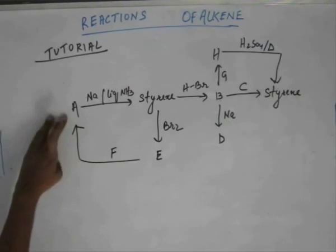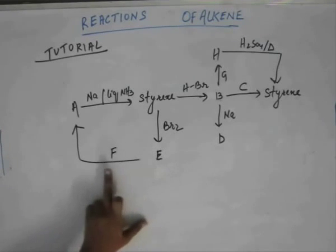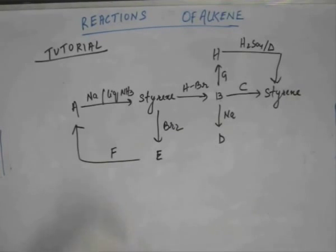A will be a substrate, an organic compound. Similarly, E will be an organic compound. F has an arrow thrown at it, so F will be a reagent that we have studied. If you are well rehearsed with all the reactions, it will be a cakewalk for you to solve this conversion problem. This is a very small, very trivial, very easy conversion.